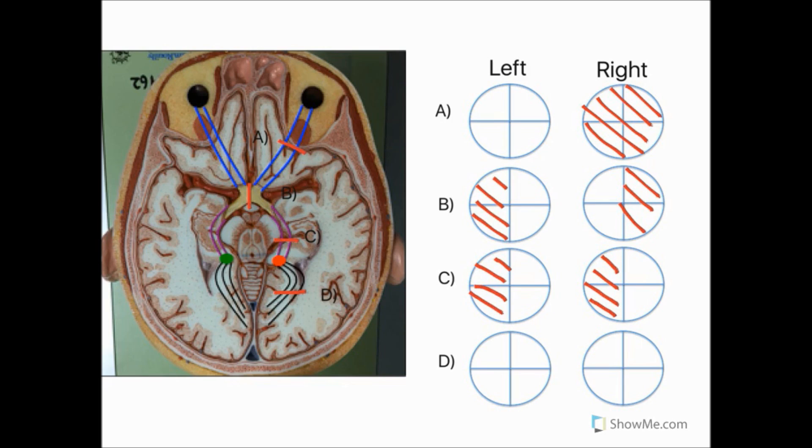So finally we have a lesion D which is a lesion in Mayer's Loop. Now these fibres are part of the inferior division of the optic radiations and carries visual information from the superior visual fields. But we will also need to remember that this lesion has only occurred on the right side of the brain.